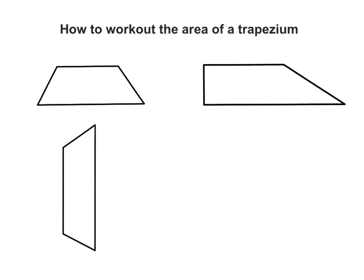To work out the area of a trapezium, all I need to do is sum the parallel sides. I'm using arbitrary letters a and b to represent the two parallel sides, and I need to multiply this sum by half of the height. The parallel sides are these two sides, and the height is the perpendicular distance from one parallel side to the other — perpendicular meaning at 90 degrees. So we add the parallel sides and multiply the sum by half of the height.